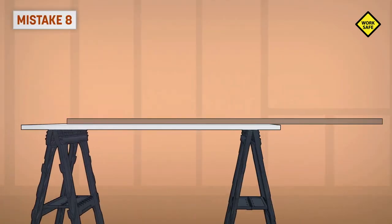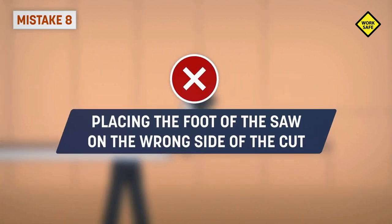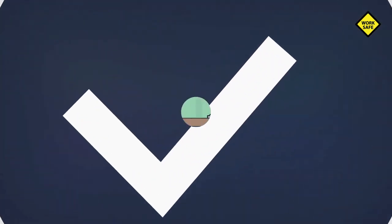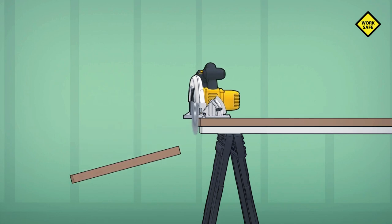Mistake 8: Placing the foot of the saw on the wrong side of the cut. To avoid blade binding and kickback, the foot of the saw should always be firmly supported by the workpiece, not placed on the section that will fall off after the cut.